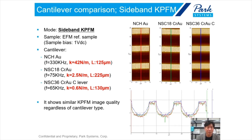The same measurement with the same sample and same cantilevers was performed using sideband KPFM. Interestingly, there is almost no difference between cantilever types — just quite similar images. These results provide strong evidence supporting the advantage of sideband KPFM: its sensitivity is only affected by tip effects, not the whole cantilever, so image quality is almost similar for all three cantilever types.